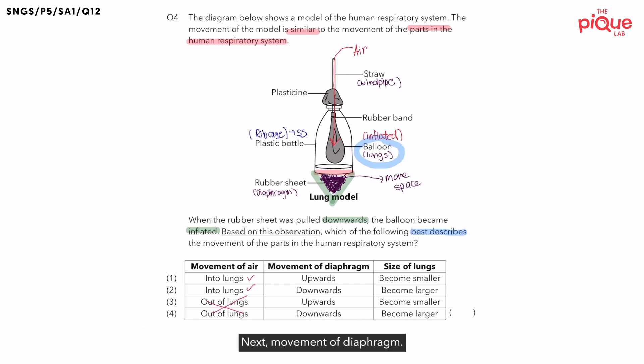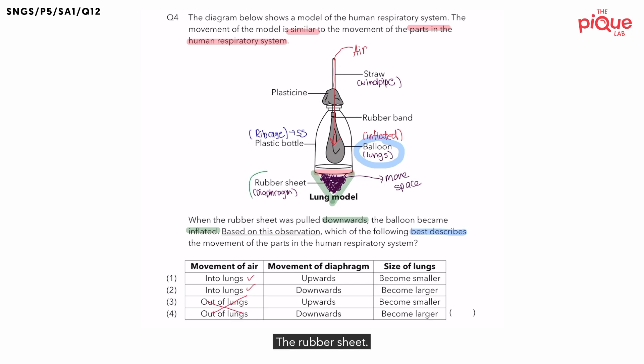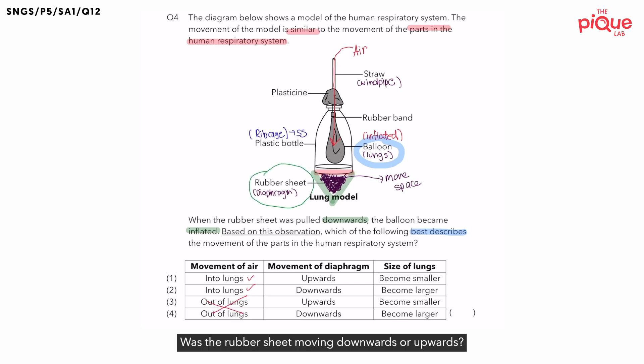Next, movement of diaphragm. Which part of the lung model represents the diaphragm? The rubber sheet. Was the rubber sheet moving downwards or upwards? The rubber sheet was pulled downwards. Therefore, we tick 'downwards' and cross out 'upwards'.